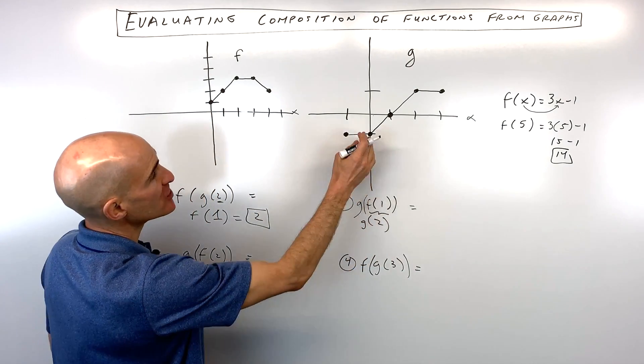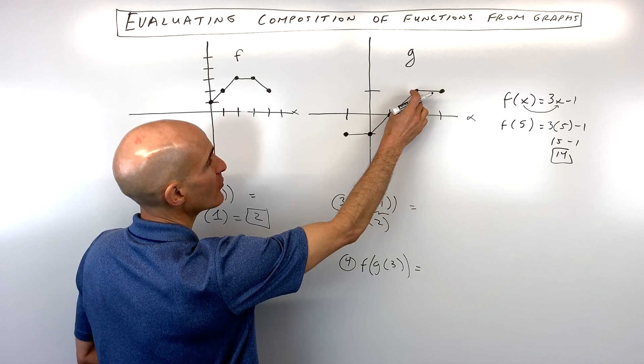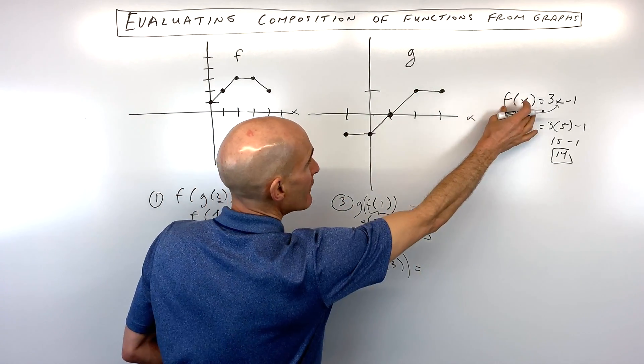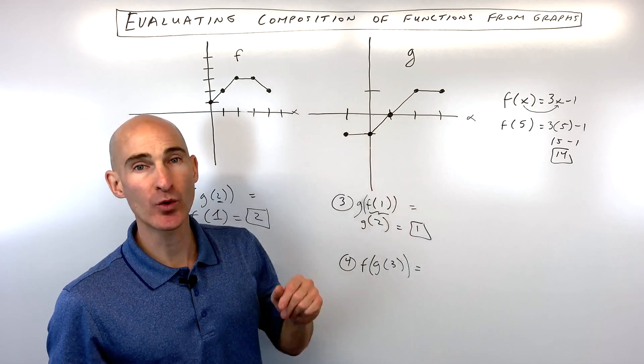Then we go over to the g function. When x equals 2, we go up to the graph, and you can see that the y value is 1. So when you think of f of x or g of x, think of that as the y coordinate. Whatever's in the parentheses, think of that as the x coordinate.